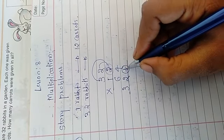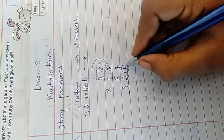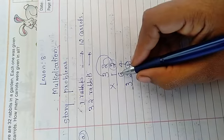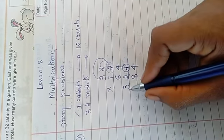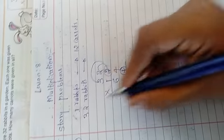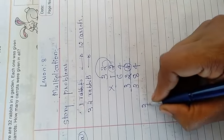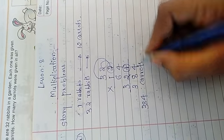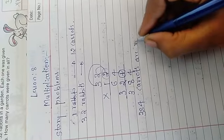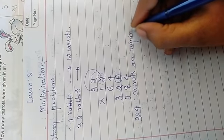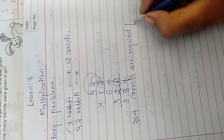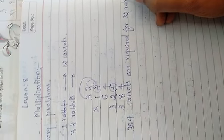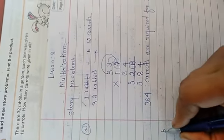Now 4 plus, plus is nothing but 0. 4 plus 0 is 4. 6 plus 2 is 8 and 3. So how many carrots are required? 384 carrots are required for 32 rabbits. Now the second one.